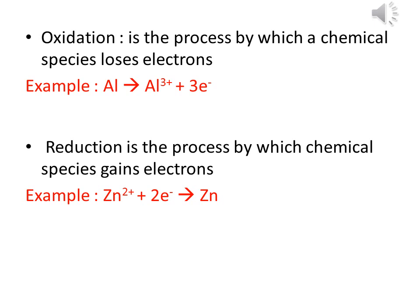What is oxidation? Oxidation is the process by which a chemical species loses electrons. An example of oxidation is when aluminum loses three electrons: Al → Al³⁺ + 3e⁻.